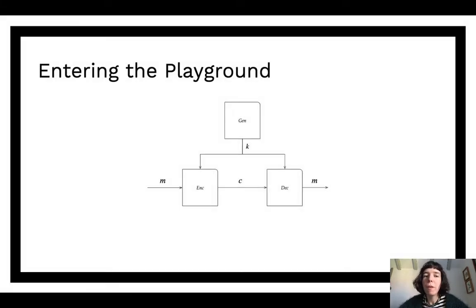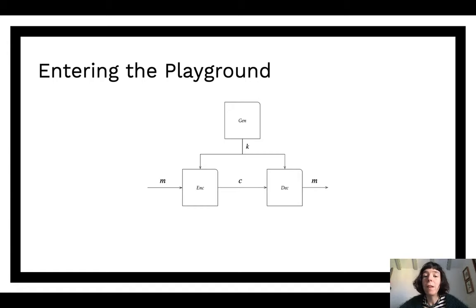Any first foray into the playground of symmetric security will see you stumbling upon three algorithms: a generation algorithm which outputs a key K; an encryption algorithm which takes as input a key K and a message M, encrypts the message under the key and outputs a ciphertext; and a decryption algorithm DEC, which takes as input the key K and ciphertext C, decrypts the ciphertext under the key and outputs the message. This picture forms the basis for many of the ideas I'll explain later, and I'll update it to show how things advanced over time.